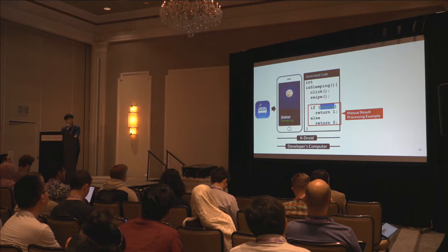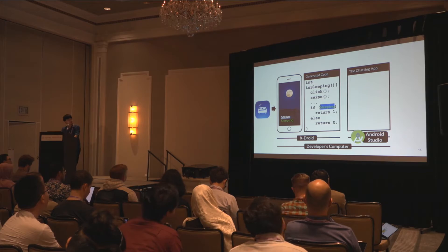The next step is to open your original chatting app in Android Studio or any text editor, then copy and paste the generated code. By using that method, you can finish your prototyping task.